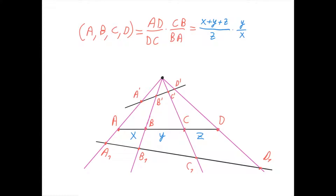The main reason the cross ratio is so important and useful is the ability for us to choose a random point in the plane and project this cross ratio onto other lines with respect to this point, and then the cross ratio wouldn't change after the projection. Here I'll show you what I mean.